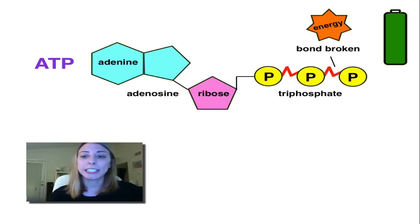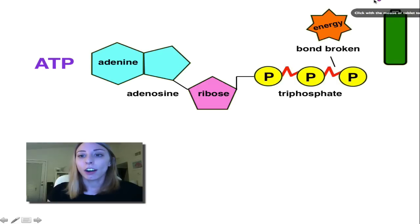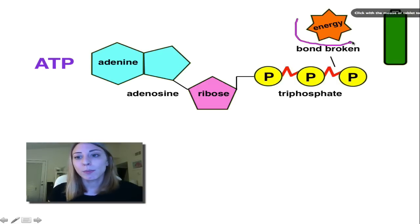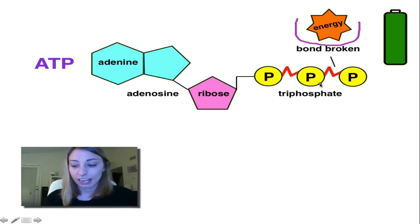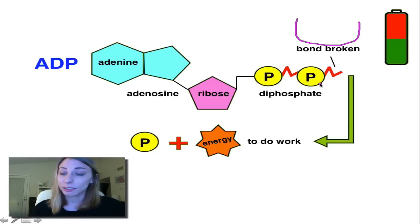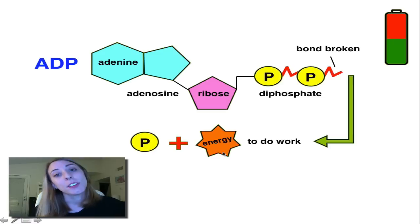So how do we release the energy? We actually need to break the bond, and that releases our energy. When we break the bond, the energy is released in that phosphate, and we can do work with the energy that's released.